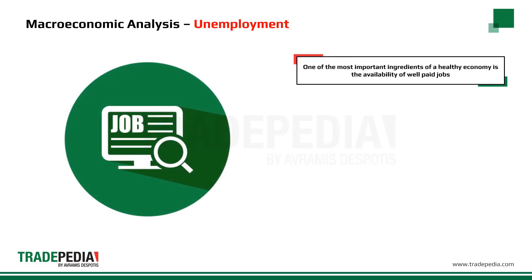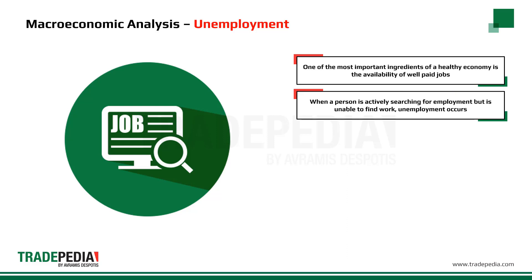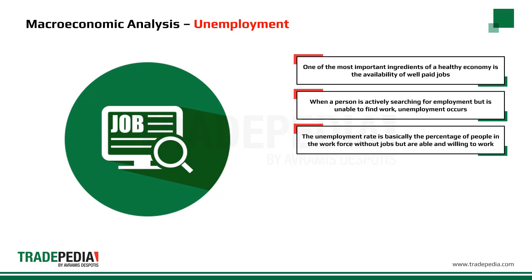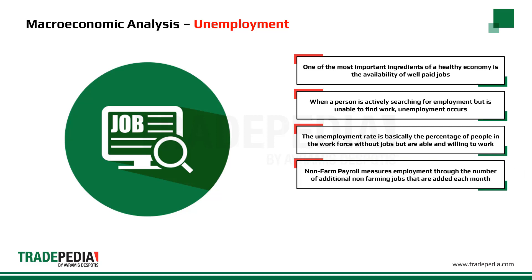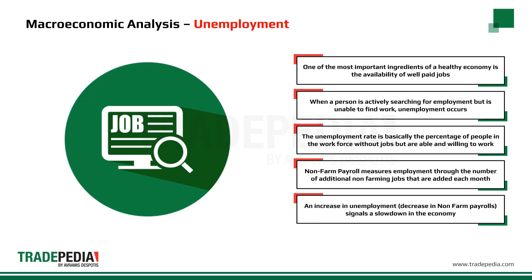Another important macroeconomic factor is the job market. One of the most important ingredients of a healthy economy is the availability of well-paid jobs. When a person is actively searching for employment but is unable to find work, unemployment occurs. Unemployment is measured by the unemployment rate, which is the percentage of the workforce without jobs but able and willing to work. Non-farm payroll measures employment through the number of additional non-farming jobs added each month. An increase in unemployment or a decrease in non-farm payrolls signals a slowdown in the economy.